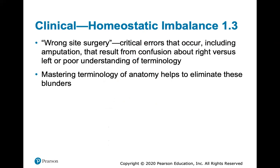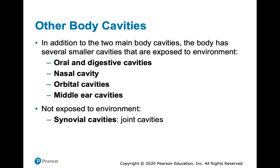Wrong site injury is a terrible thing that can occur — critical errors including amputations that result from confusion about right versus left or poor understanding of terminology. This has happened: surgeons have operated on the wrong arm or amputated the wrong leg, and it's actually more common than one might think. This is why reviewing anatomical terminology matters, especially for those of you entering healthcare fields, to help eliminate those mistakes.